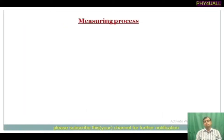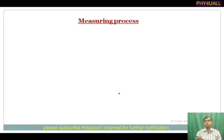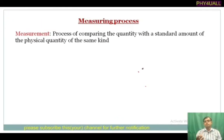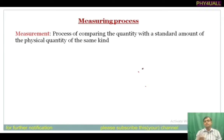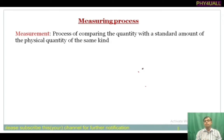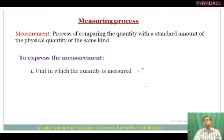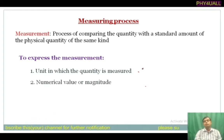Now look at the measuring process. For a physical quantity that can be measured, we will be using different instruments. A simple example: for measuring length you will be using a measuring tape, or a balance for measuring mass. Measurement is the process of comparing the quantity with the standard amount of the physical quantity of the same kind. That means it is just a comparison with the known value.